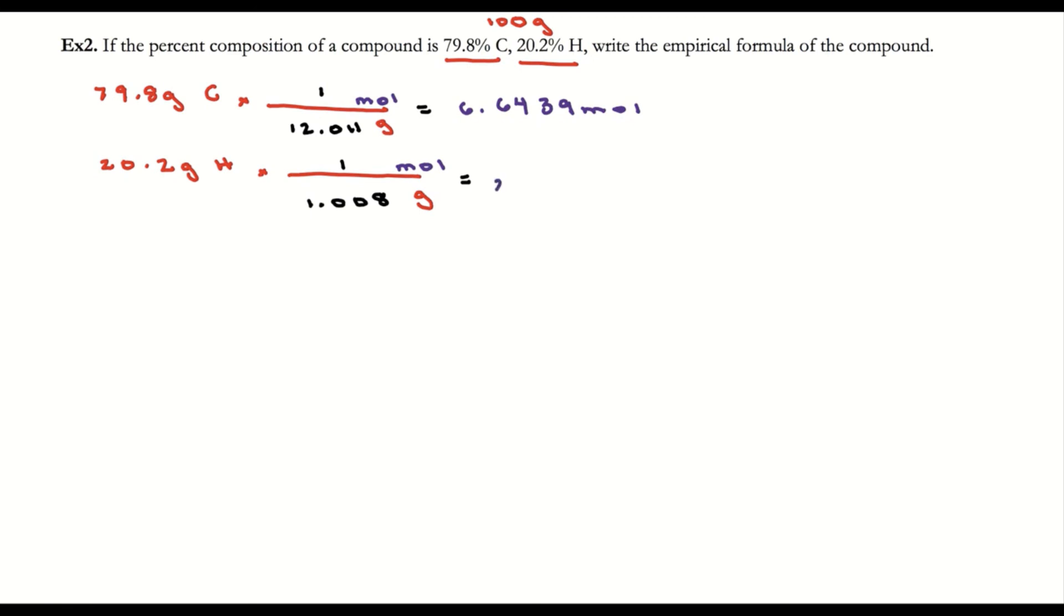To determine the ratio, I need to divide by the smallest number of moles, which is 6.6439. I'm going to divide both by that. The carbon becomes one.